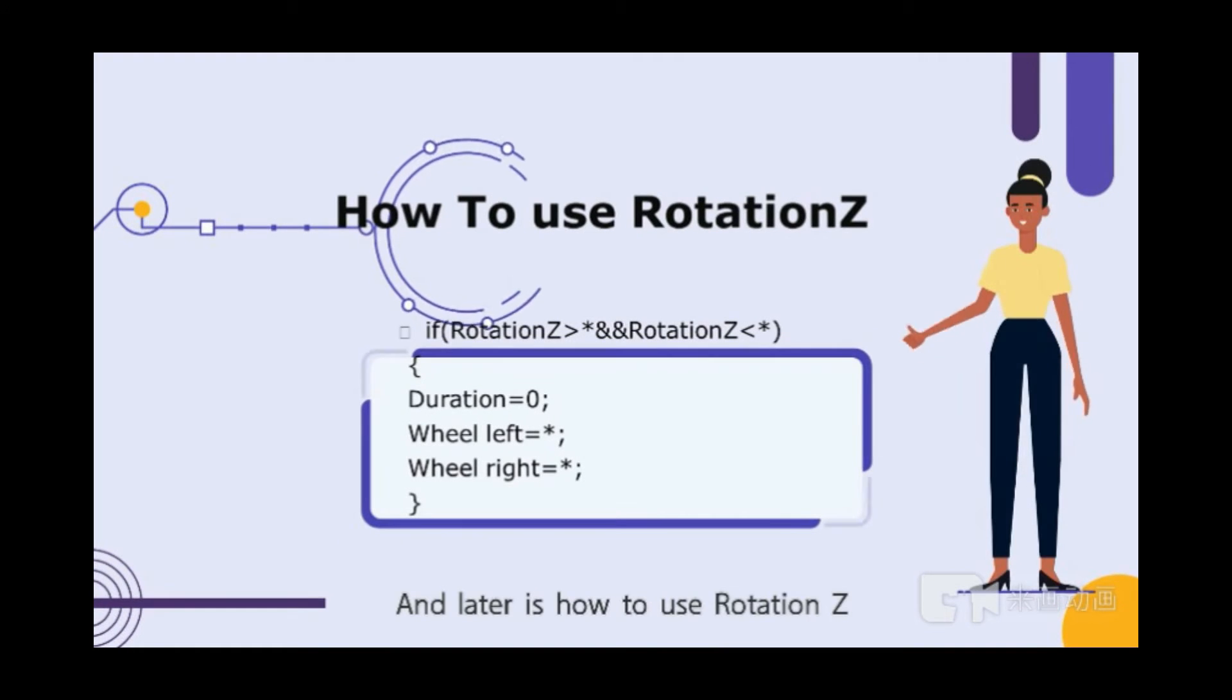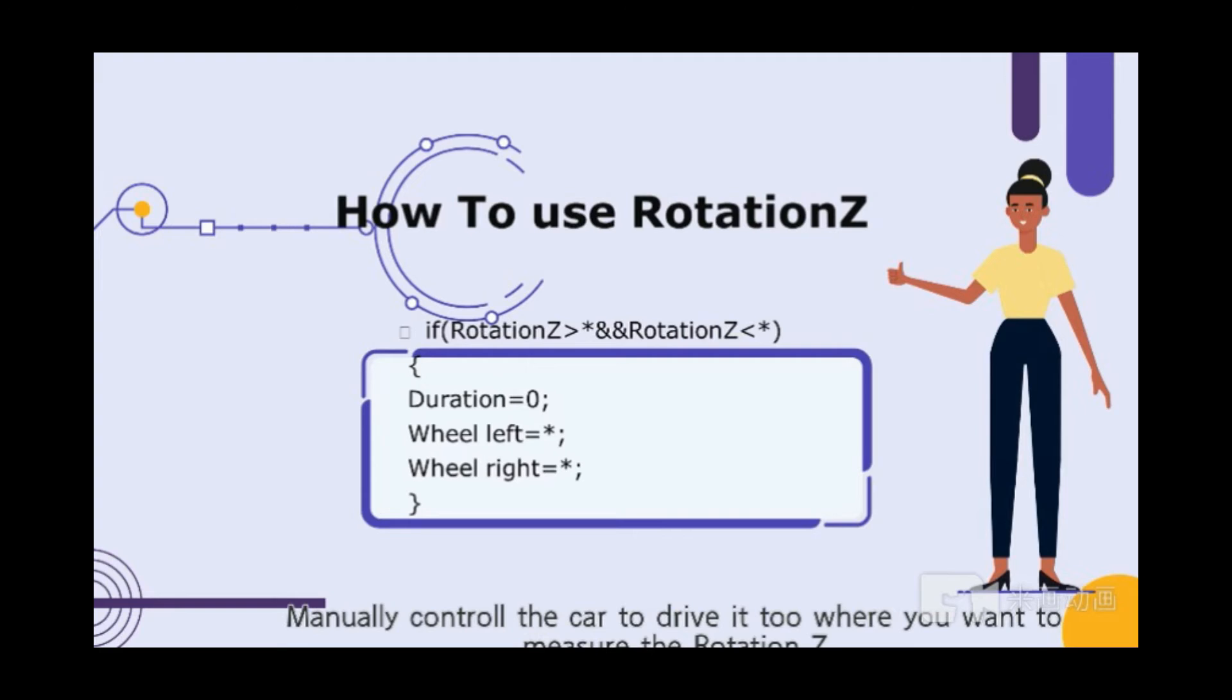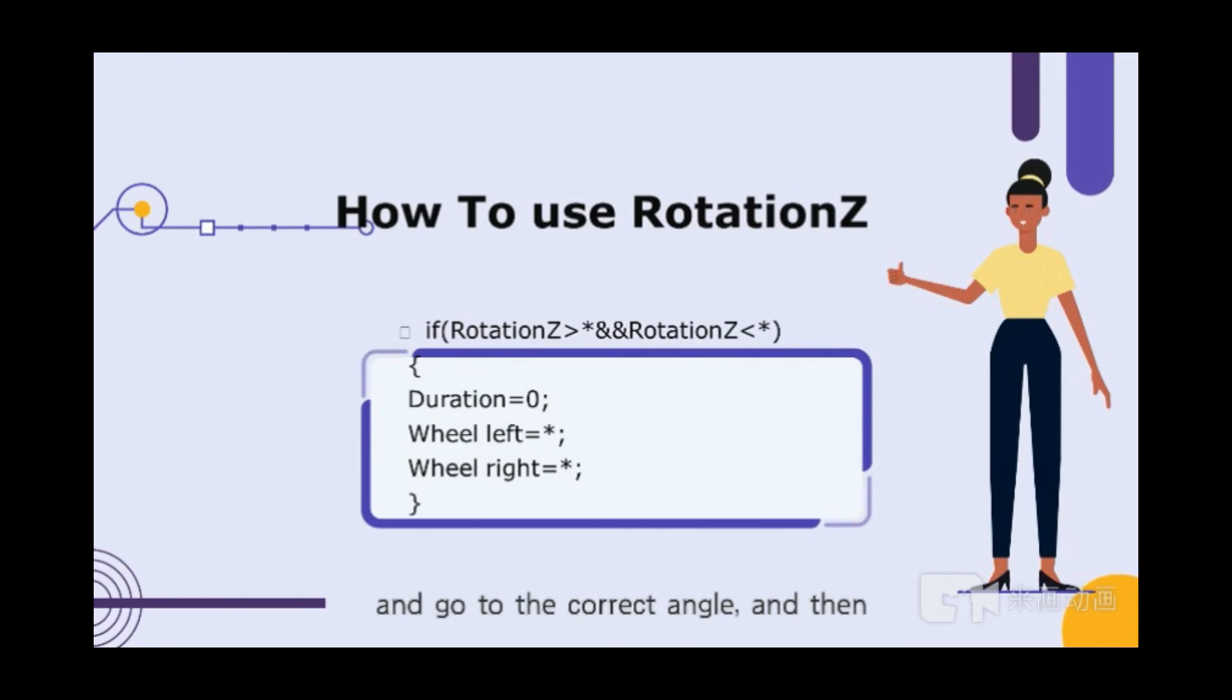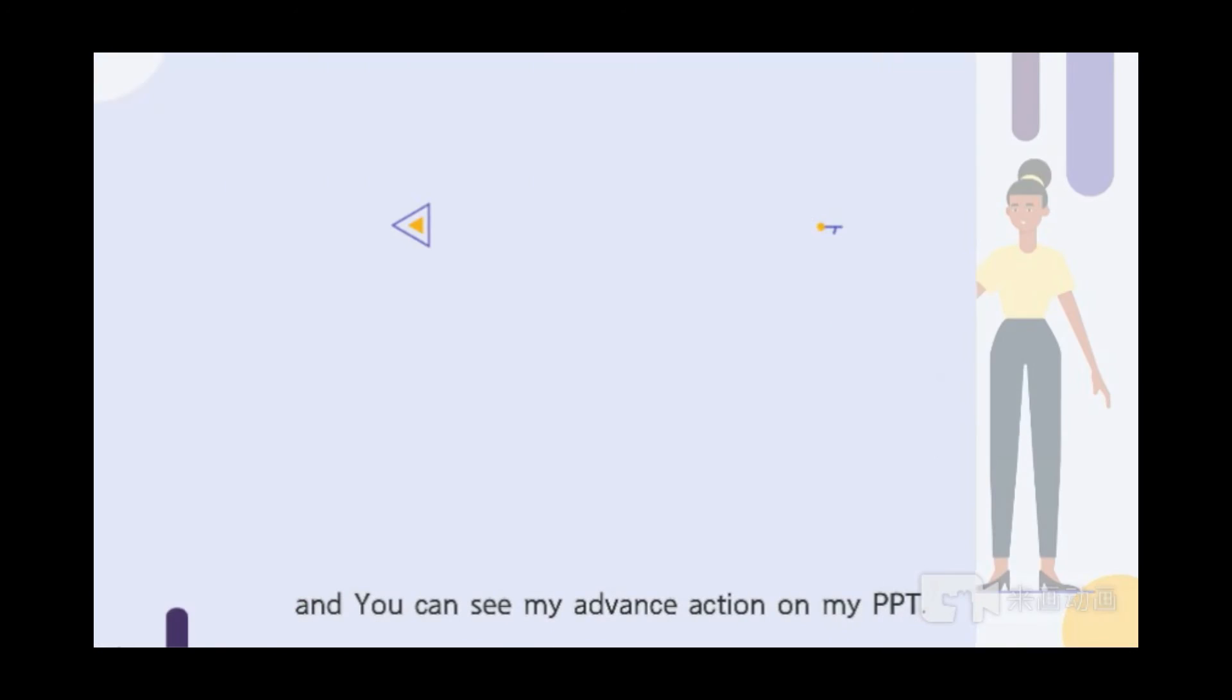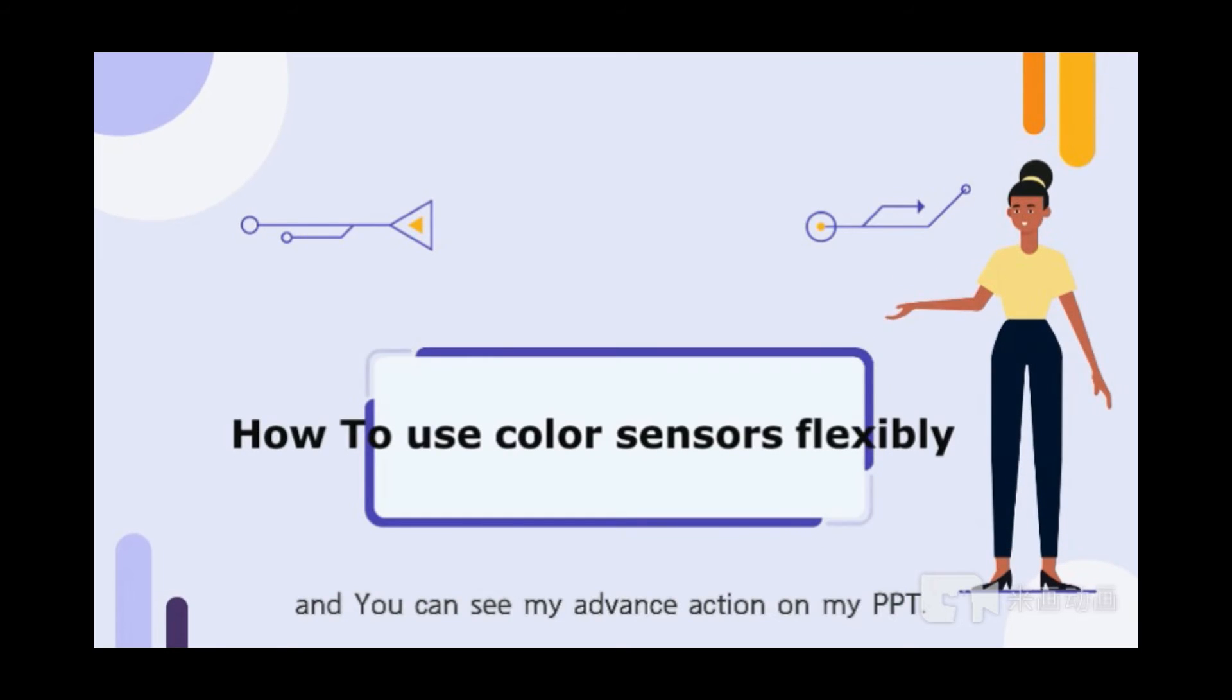How to use Rotation Z: Manually control the car to drive it to where you want to measure the Rotation Z and go to the correct angle, then record the data and write it in Advanced Action. You can see my Advanced Action on my PPT.